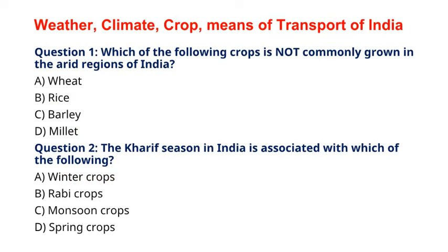Question 1: Which of the following crops is not commonly grown in the arid regions of India? A. Wheat, B. Rice, C. Barley, D. Millet. The correct answer to question 1 is option B, Rice. Rice cultivation requires a significant amount of water, which is not readily available in arid regions.